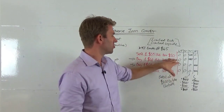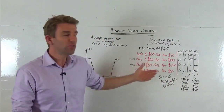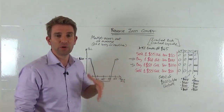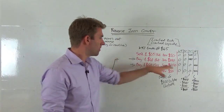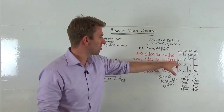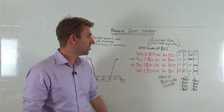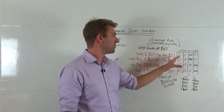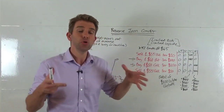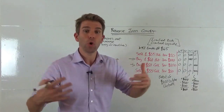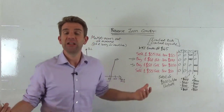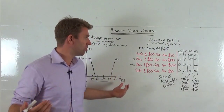Each option costs $100 — one contract at $1 per share times 100 shares. So we buy one contract for the put at $100 and one contract for the call at $100. Our maximum downside if we did nothing else is $200, because when you're buying an option the worst it can do is go to zero — that's the most you can lose.